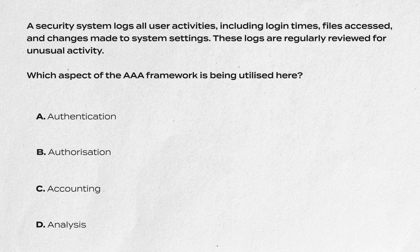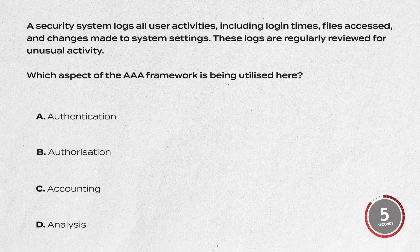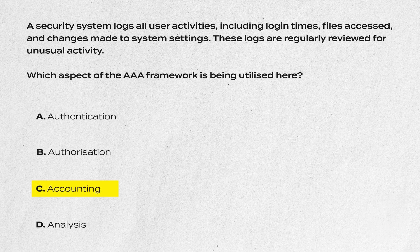Question two: A security system logs all user activity, including login times, files accessed, and changes made to system settings. These logs are regularly reviewed for unusual activity. Which aspect of the AAA framework is being utilized here? Is it A, authentication; B, authorization; C, accounting; or D, analysis? The answer is C, accounting. Accounting is the step that keeps records of activity, including things like login times.